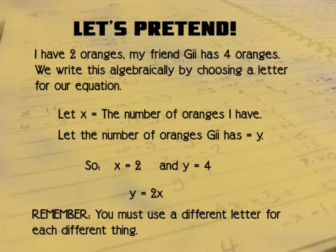So remember, you must use a different letter for each different thing. So if we also wanted to talk about apples, the number of apples that Gil and I have, then we should use different letters for apples because apples are not the same as oranges. This has been a very quick introduction. And you should probably do a little more practice.